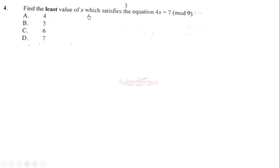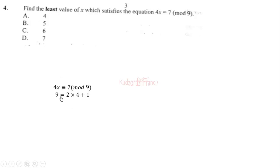Now we find the least value of x satisfying 4x ≡ 7 (mod 9). Using the congruence relation: we need the greatest common factor of 4 and 9, which is 1. We write 9 as 2 times 4 plus 1, then make 1 the subject to obtain the expression. We keep 2 times 4 as is.